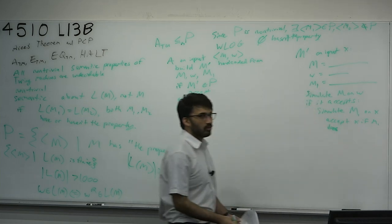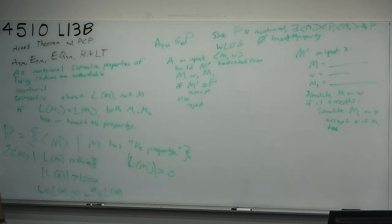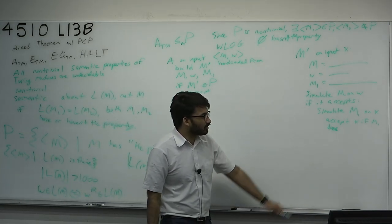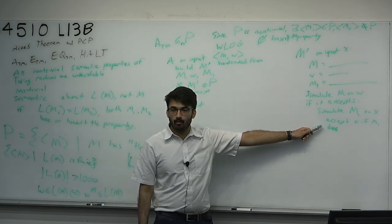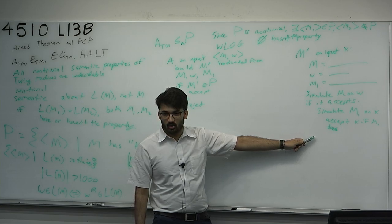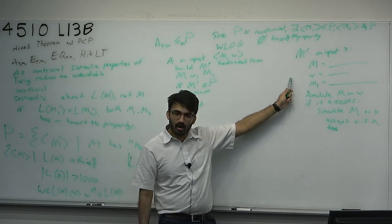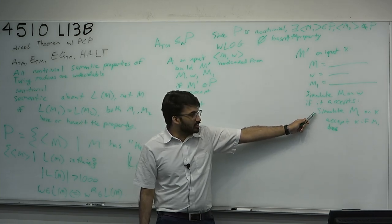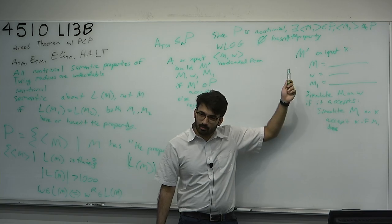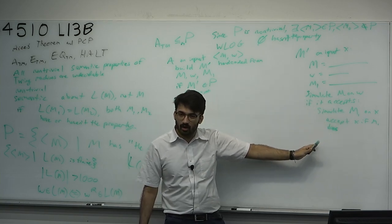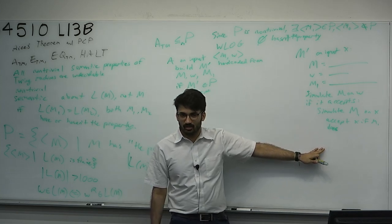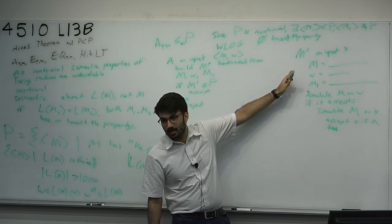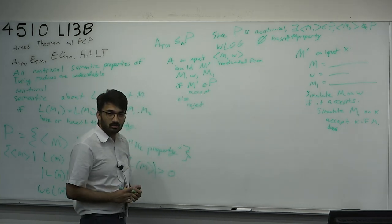The key difference from other machine-simulation proofs we've done: instead of doing arbitrary behavior, M' is quite literally going to be M1 — it's going to pretend it's M1, forcing itself to have the property. By simulating M1, it's doing whatever M1 does. M1 has the property, so M' pretends it has the property and becomes semantically equivalent to M1, accepting the same strings — but only if M accepts W. If M does not accept W, then L(M') is going to be the empty set, which by assumption, without loss of generality, does not have the property.